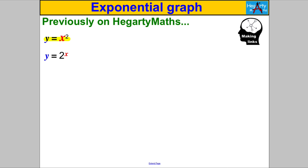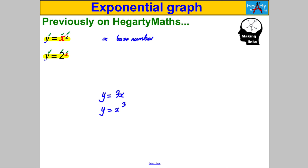We should already know a graph like y = x², which is a quadratic graph. I want you to compare it to y = 2^x. They both have an x in them and a 2, but the role of x is very different. In y = x², x is the base number — as in all graphs we've done before, like y = 3x or y = x³. Whereas in y = 2^x, x is the exponent or the power, and these graphs look very different.